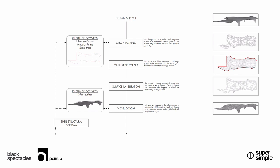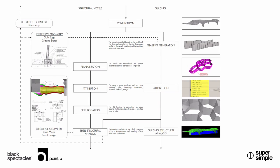This is an overall diagram of the process starting with our design surface. It shows circle packing, then mesh remeshing, surface panelization, and the voxelization from that. Voxelization splits into: on the right side are some of the secondary systems — the glazing package and some of the rationalization of the attributes of the voxels. On the left we had the panelization.